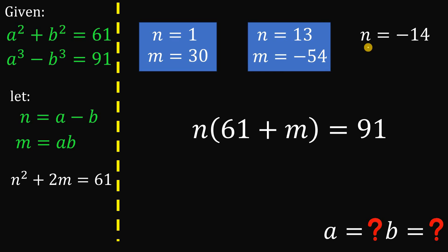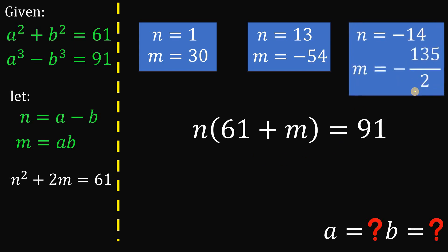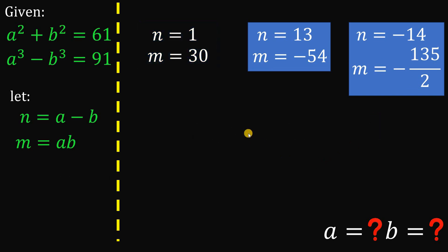For the third case, when n equals negative 14, using the same method we get m equals negative 135 over 2. So our three cases are: n equals 1 with m equals 30, n equals 13 with m equals negative 54, and n equals negative 14 with m equals negative 135 over 2.